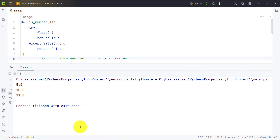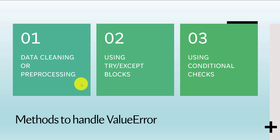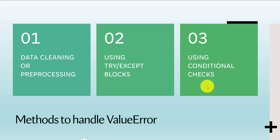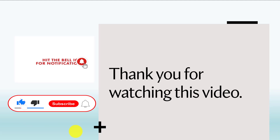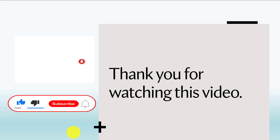So these were some methods in Python to handle ValueError: could not convert string to float. In the first we saw replace(), strip(), and lstrip(). In the second we used a try/except block. In the third we used multiple conditional statements with a helper function. Thank you for watching — please like, share, and subscribe to our channel for more Python tutorials, and hit the bell icon so you never miss an update.